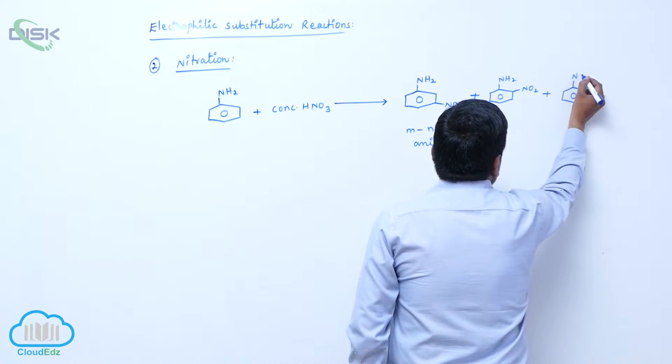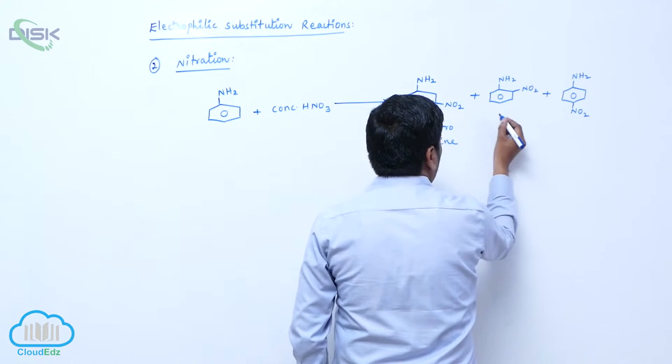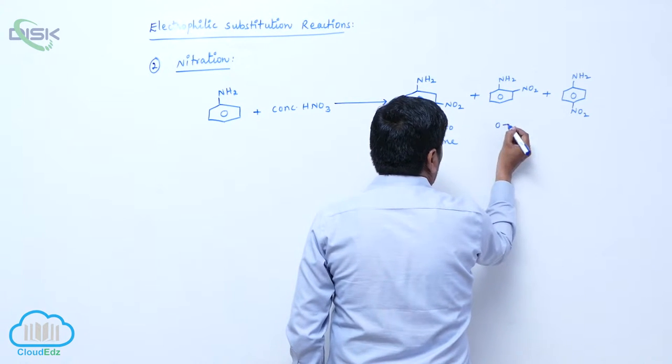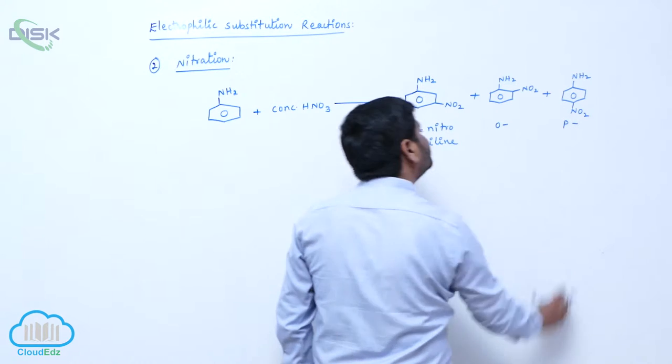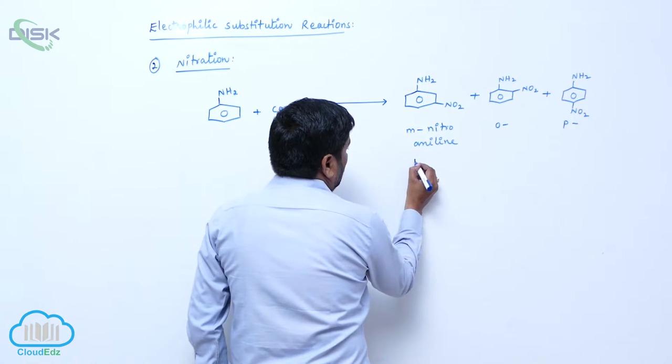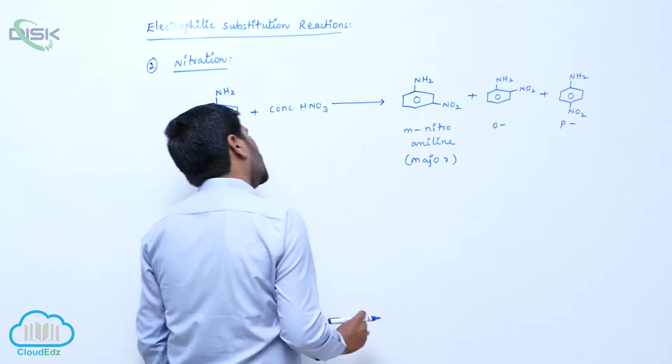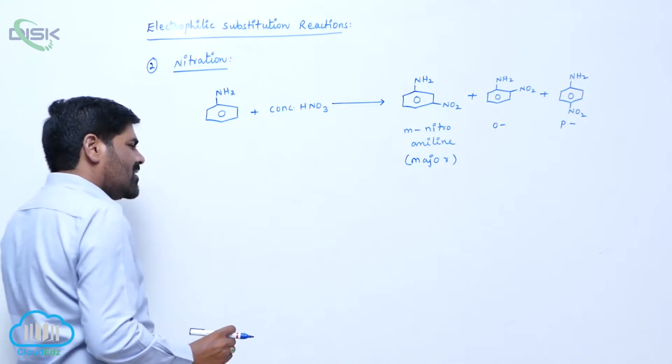This is amino group, nitro group. This is meta, ortho. What about this? Para. In three products, meta product is slightly major, which is major. Meta product is slightly major.